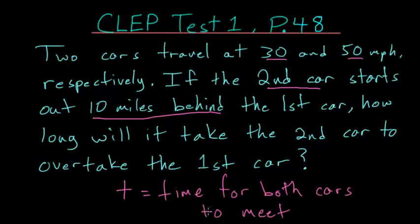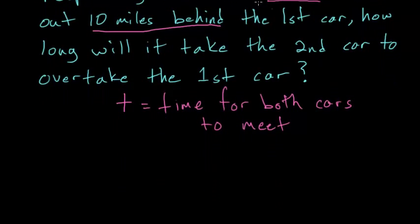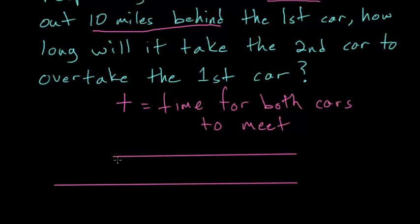Now that we have our variable, what we can do is draw a little diagram to get a better idea of what's happening. We know that both cars will start at different points but will end at the same point. Let's say the top part is for the first car and the bottom part is for the second car. Notice that they end at the same point, and the second car is going to start out 10 miles behind the first car.